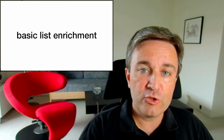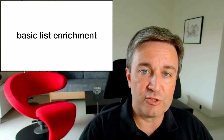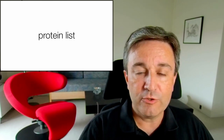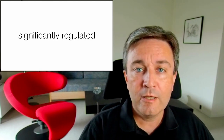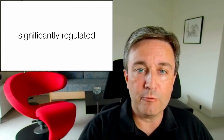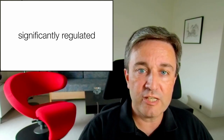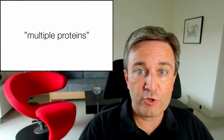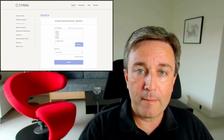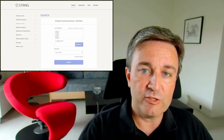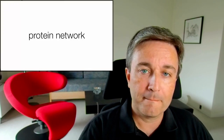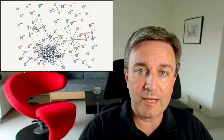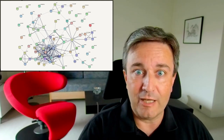With these genesets, you can do two types of enrichment analysis. The first is basic list enrichment. In this case, you provide a protein list, which would typically be the significantly regulated proteins from some study. You go to the multiple proteins search option in STRING, and in the web interface, you simply paste in your list of proteins and hit search.